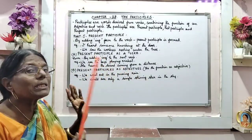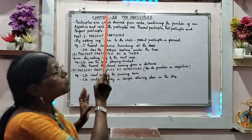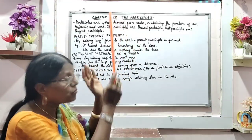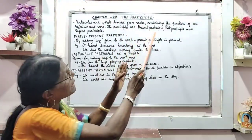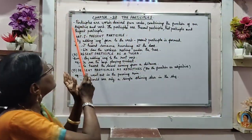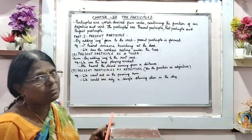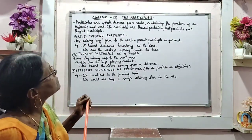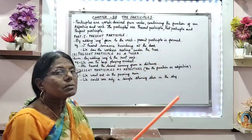Now, what are participles? Participles are words derived from verbs combining the function of an adjective and a verb. The participles are, there are three.